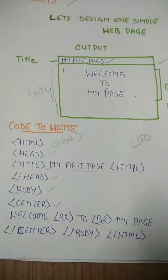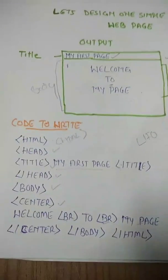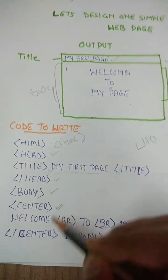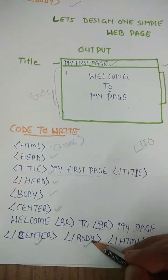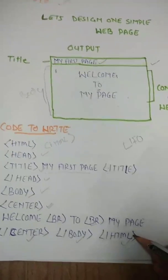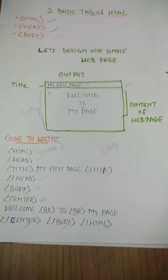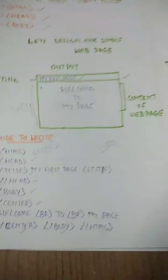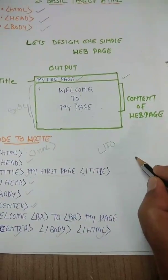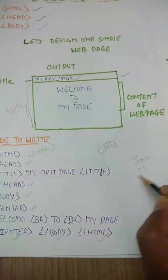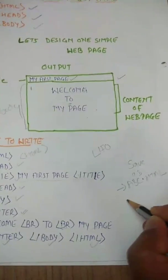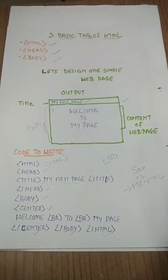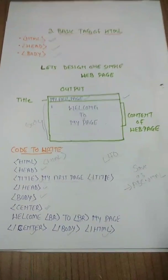Using LIFO again — last in, first out — we close the center tag first since it was the last opened, then close the body tag, and finally close the HTML tag. This is how you write the code for this simple web page. After that, save the file using 'Save As' and give it any name like ABC with the extension dot HTML. Open it in a browser and your web page will appear as shown in the output.